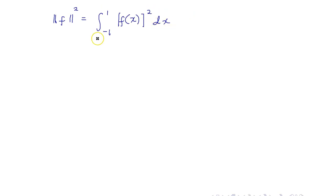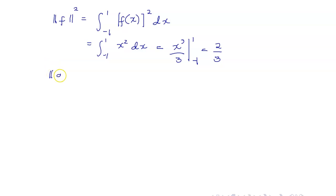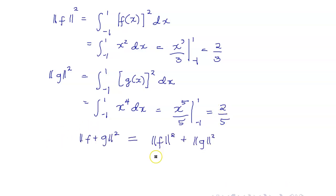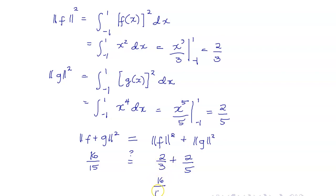Next, let us compute the norm of f squared. This is the definite integral of f(x) squared, which equals x cubed over 3 from negative 1 to 1, or 2 thirds. Next, the square of the length of g is the definite integral of g(x) squared. Since g(x) equals x squared, g(x) squared is x to the fourth, and this integral is equal to 2 fifths. Let us verify the Pythagorean theorem: the square of the length of f plus g is 16 over 15, and the square of the length of f plus the square of the length of g is 2 thirds plus 2 fifths, which is really equal to 16 over 15.